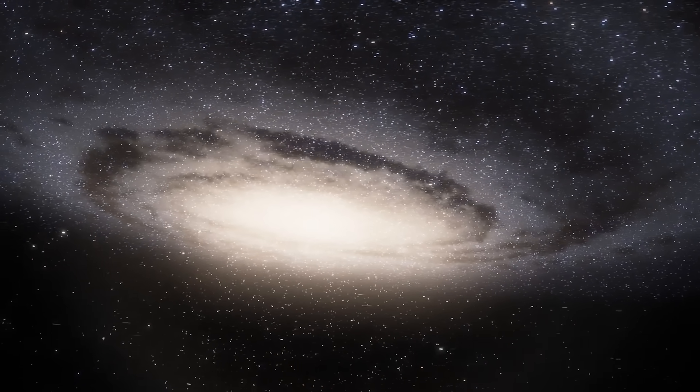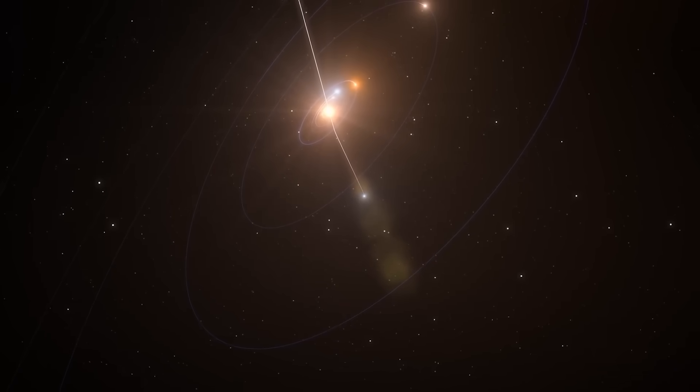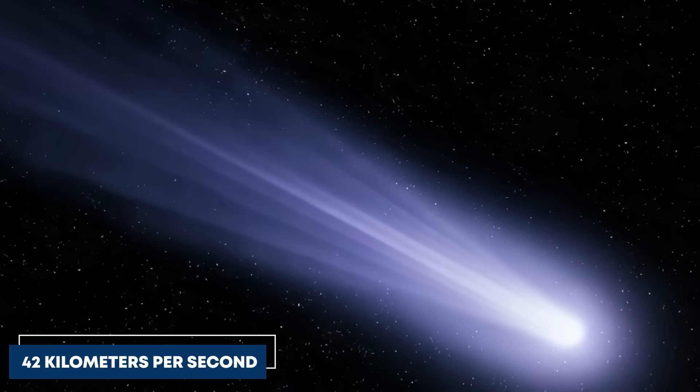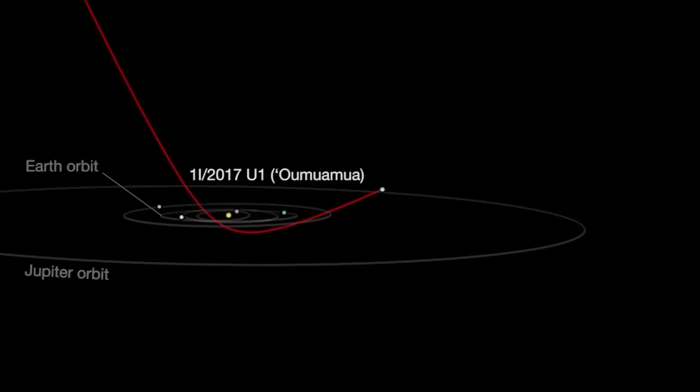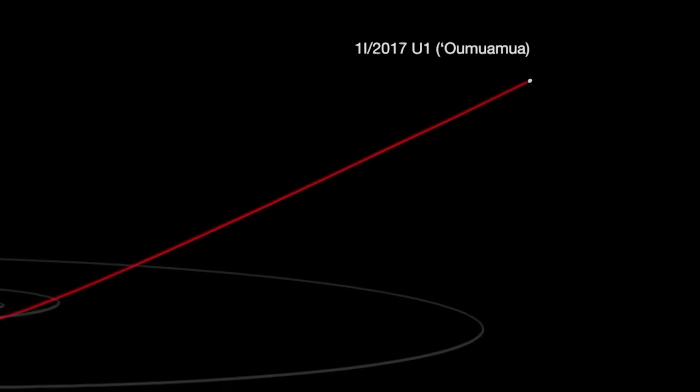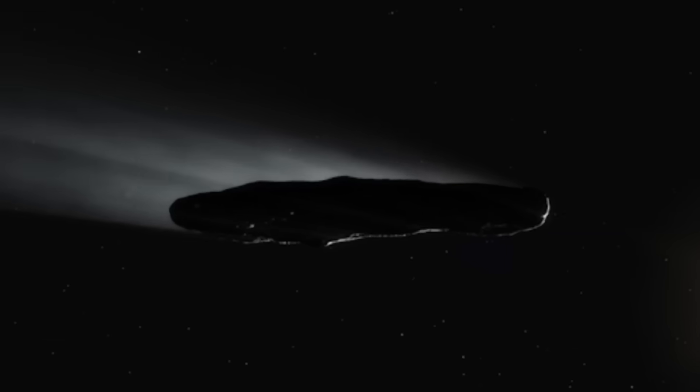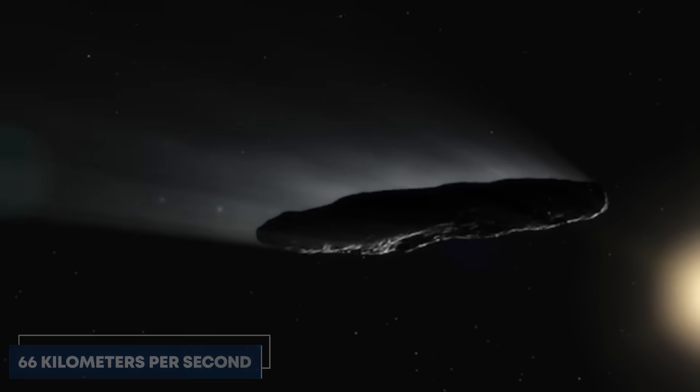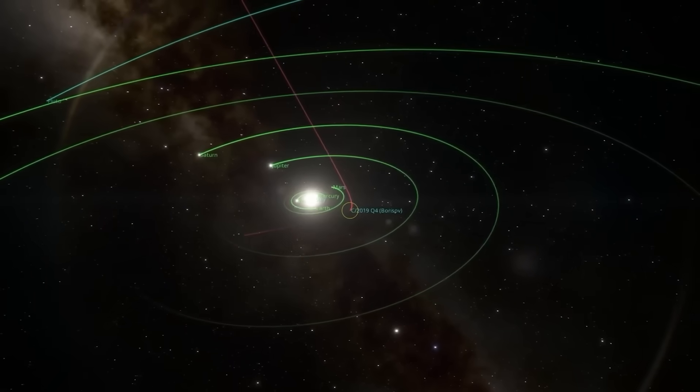What makes an object interstellar? It's all about the math. Any object traveling faster than 42 kilometers per second has enough velocity to escape our Sun's gravitational pull entirely. 3i Atlas clocks in at nearly 66 kilometers per second relative to the Sun, well above that escape threshold.